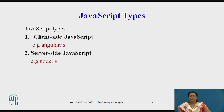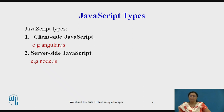Now we will see the different types of JavaScript which are available. There are basically two different types: the first one is client-side JavaScript, with an example being AngularJS. Then there is server-side JavaScript, with an example being NodeJS.